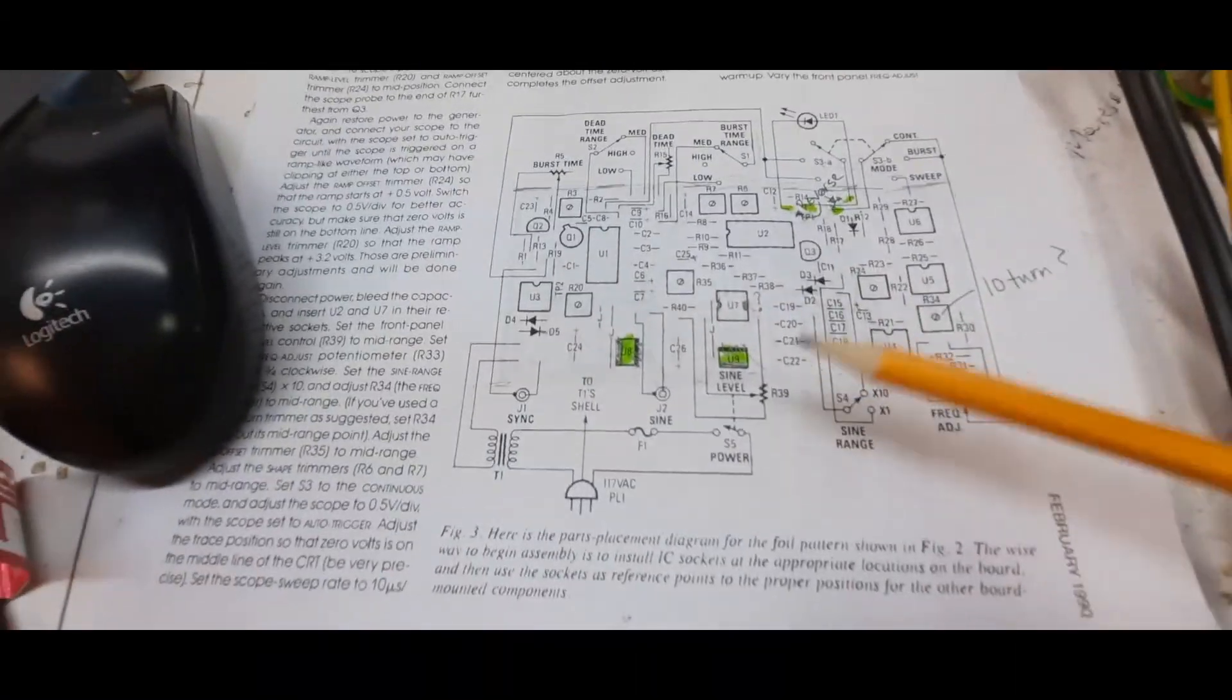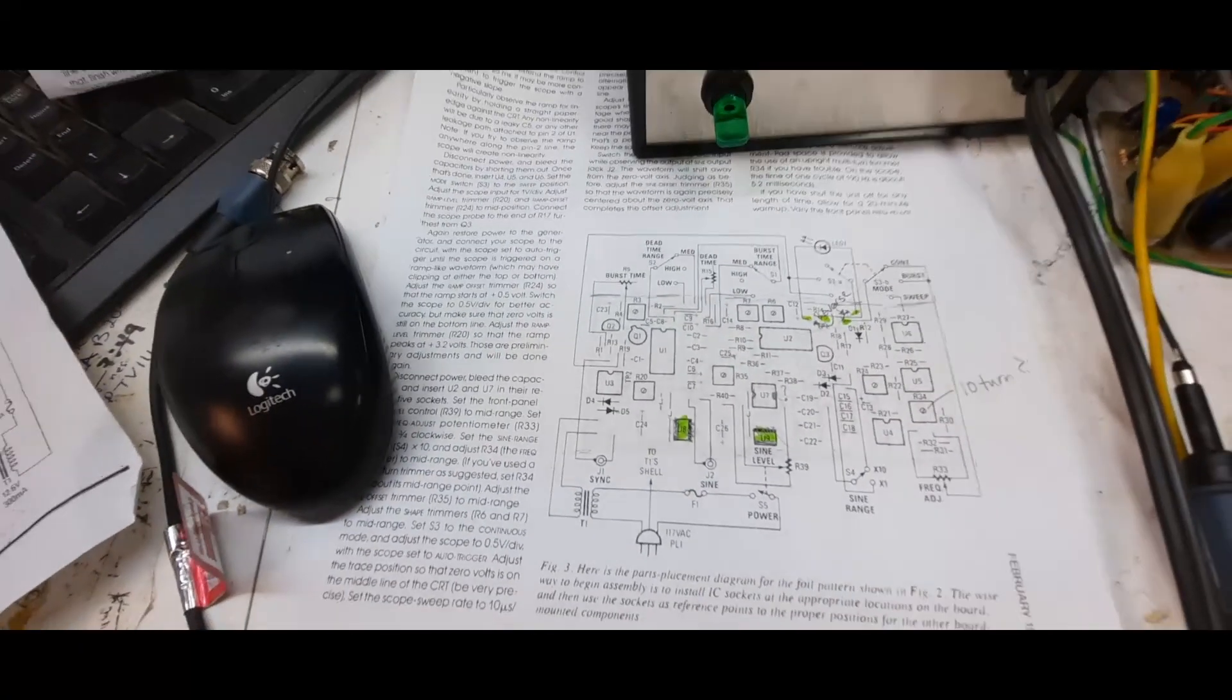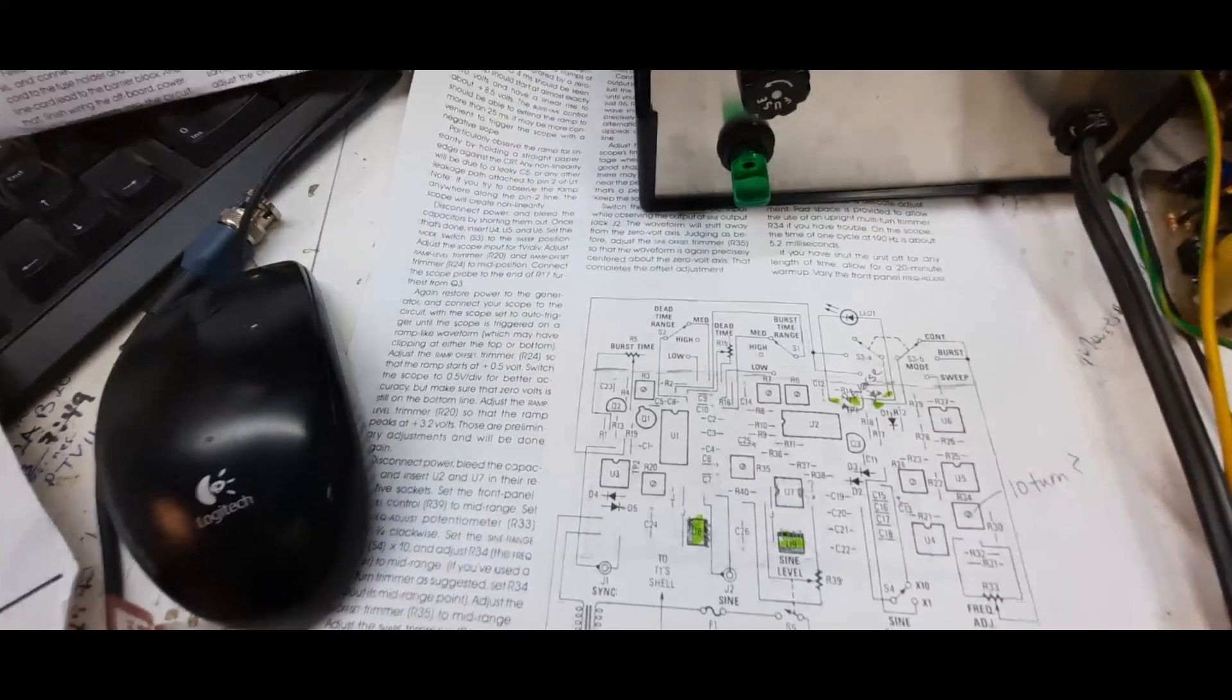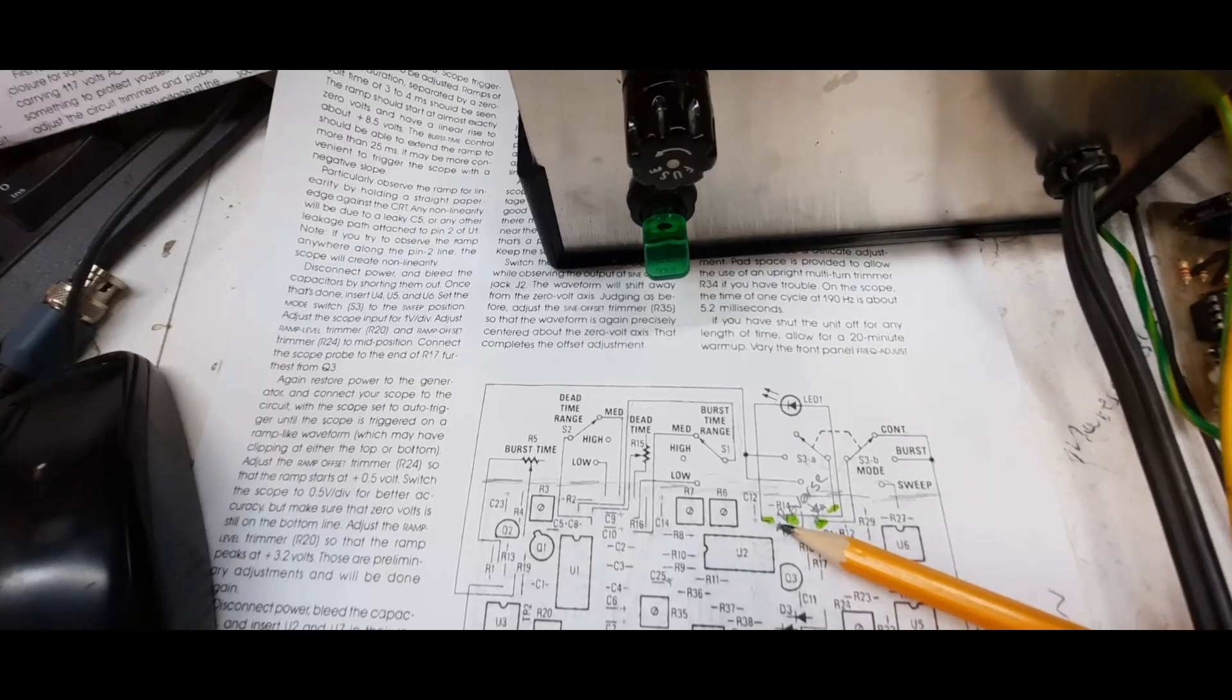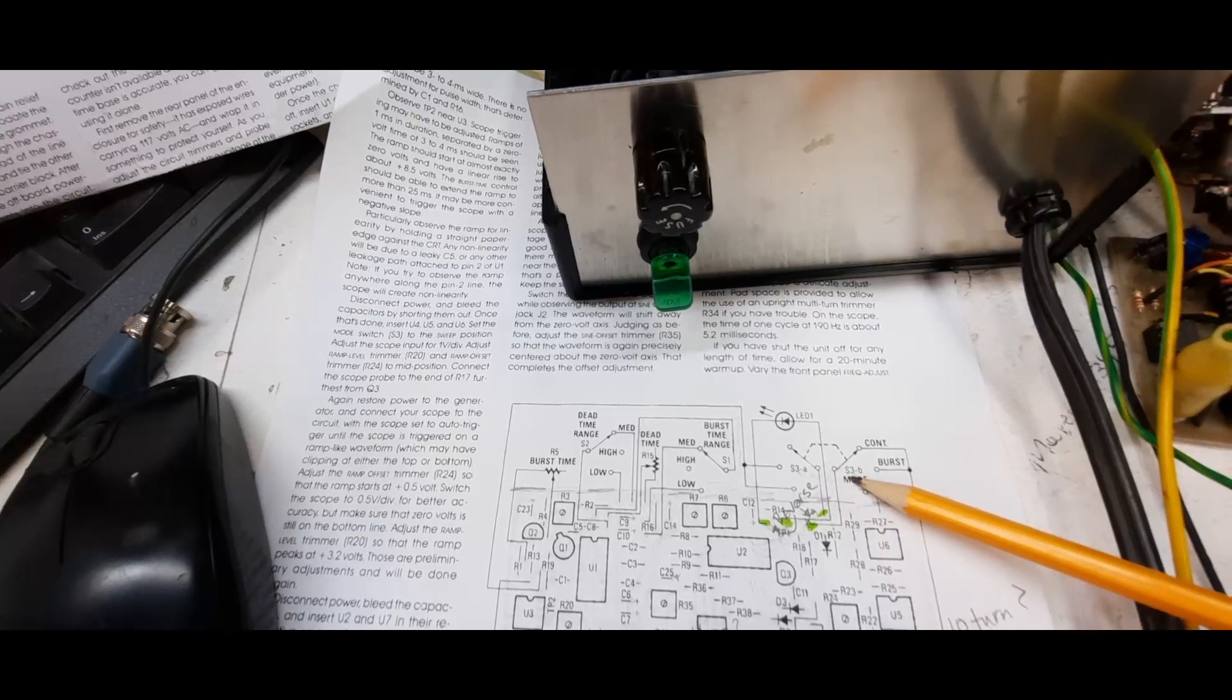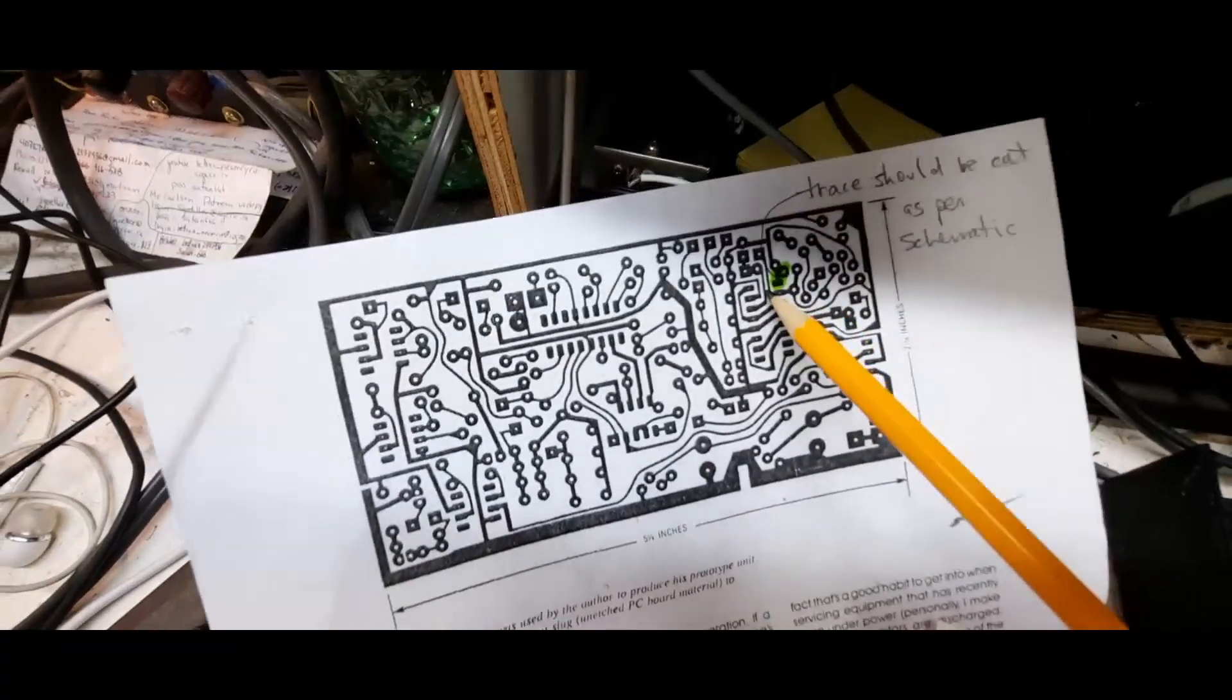I can't even get the sweep and continuous output working. To be honest, there's a lot of mistakes on this project. I looked at the March and April versions of Popular Electronics for corrections, but nothing. Off the top, the orientation of the regulators was backwards, the LED is reversed, and switch 3A and 3B center poles are reversed.